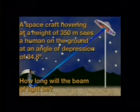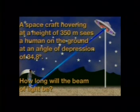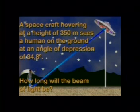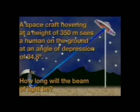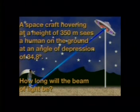Using what you have learned in this lesson, do this task by yourselves at home: An alien spacecraft hovering at a height of 350 meters sees a human on the ground at an angle of depression of 34.8 degrees. How long is the immobilizing beam of light it shoots out directly at the human? Remember to put all the information onto a diagram first, and don't forget that there are three trig ratios that you can choose from.